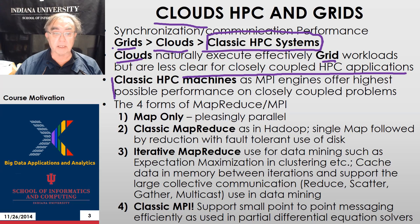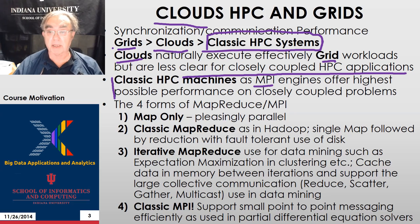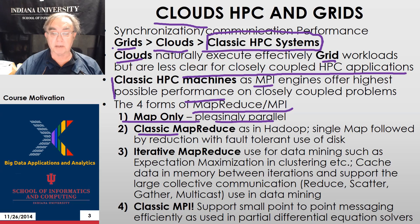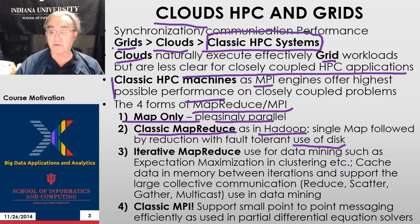High-performance computers typically run the Message Passing Interface (MPI) parallel programming model, where the user does the parallelism by hand and the processes send messages through MPI. They offer the highest performance on closely coupled problems. We can compare MapReduce and MPI: map-only is the pleasingly parallel case. Classic MapReduce, done in the basic version of Hadoop, uses a single map followed by a reduction, using disk to communicate between steps. The use of disk provides fault tolerance but slows down the system.